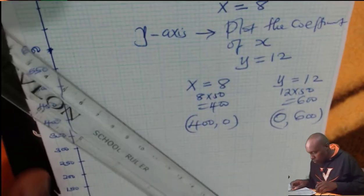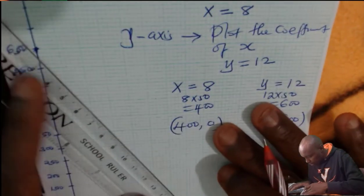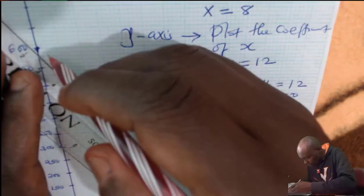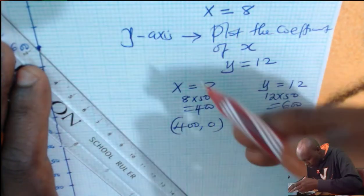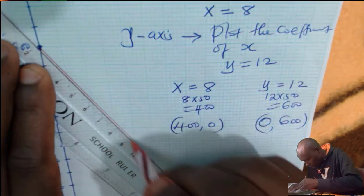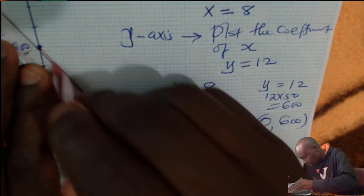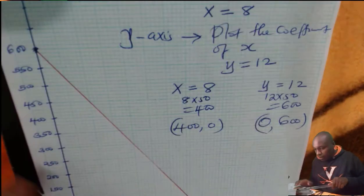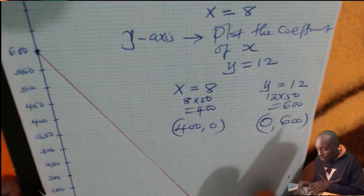So you draw now the search line. You draw the search line. And this is the line that you're going to use to slide. Either to get the maximum profit or the minimum profit.